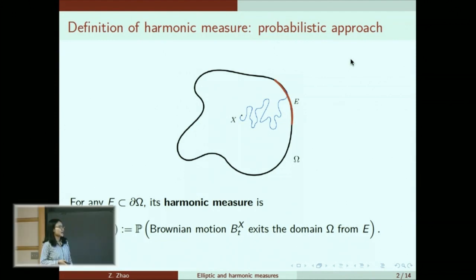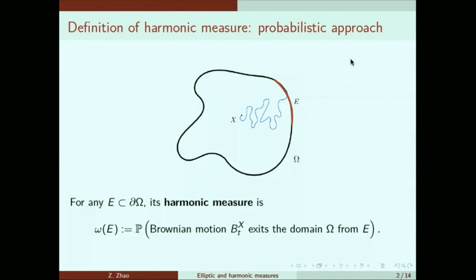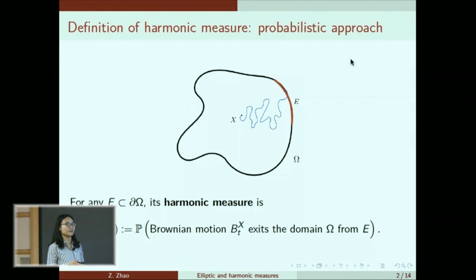Given a bounded domain, a Brownian motion starting from a point inside the domain would eventually hit the boundary. The harmonic measure just captures the likelihood of where in the domain the Brownian traveler is going to end up.